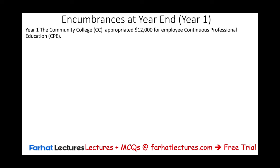I'm going to start by looking at a community college that's going to appropriate $12,000 for employees' continuous professional education. Simply put, we're setting up a budget where the community college is setting aside $12,000 for continuous professional education for their employees. Therefore we are going to credit appropriation for continuous professional education, and debit fund balance unassigned $12,000. We assigned $12,000 in the budget for this continuous professional education expense.